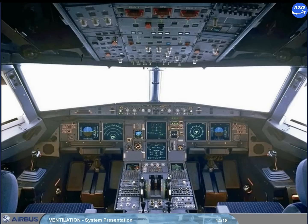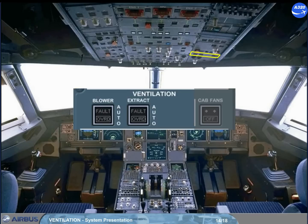On the overhead panel, there is a ventilation panel that contains three push button switches associated with the ventilation system. During the pre-flight cockpit scan, you should confirm that these switches are in their lights-out position. The avionics ventilation system will then operate automatically and requires no further pilot input.